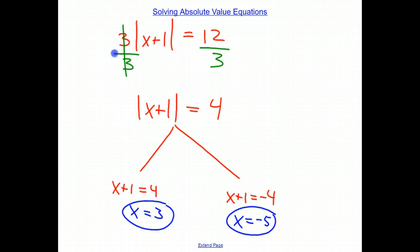Either way we can solve the equation this way. If we plug in 3 for x, we get 3 plus 1 equals 4. So the absolute value of 4 is of course 4. If we plug in negative 5 for x, we get negative 5 plus 1 gives us negative 4. The absolute value of negative 4 is 4.